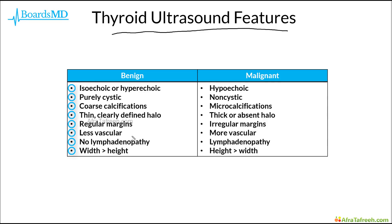All of these features are in contrast to thyroid nodules which are more likely to be malignant. On ultrasound, malignant lesions tend to be hypoechoic, non-cystic, have microcalcifications, a thick or absent halo, irregular margins, tend to be highly vascular, will classically have lymphadenopathy especially in the presence of malignancy, and their height is classically greater than their width. In question stems, be sure to pick up on whether features suggest a benign or malignant thyroid nodule.